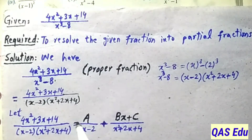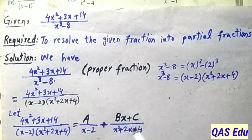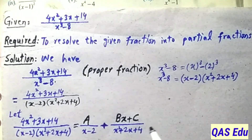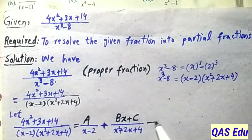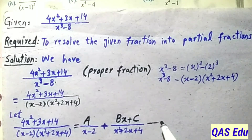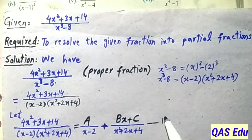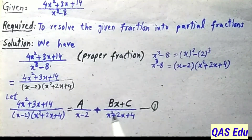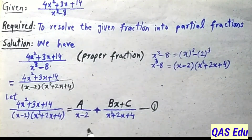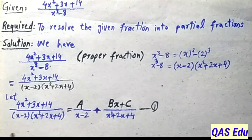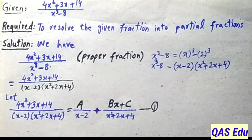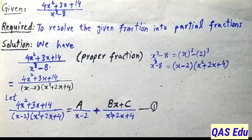B is multiplied by x and C is a constant. So the setup is: A over (x - 2) plus (Bx + C) over (x² + 2x + 4). This is equation number 1. We need to find A, B, C. Putting values into this equation will allow us to resolve the given fraction into partial fractions.